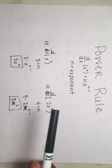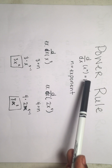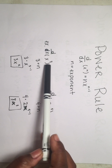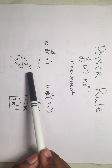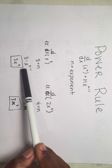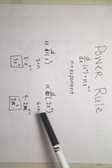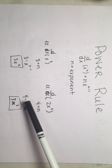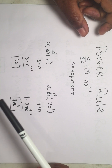The power rule states that the derivative of x raised to an exponent n is going to be that exponent times x raised to the exponent minus one. Our first example: the derivative of x cubed — n is three, so we get three times x raised to three minus one, which is three x squared. Our next example is the derivative of two x to the fourth: the exponent is four, so it's four times two x raised to four minus one, which gives us eight x cubed.